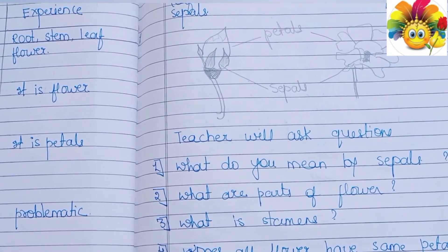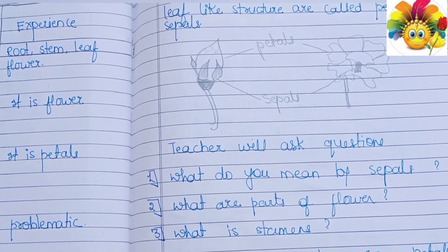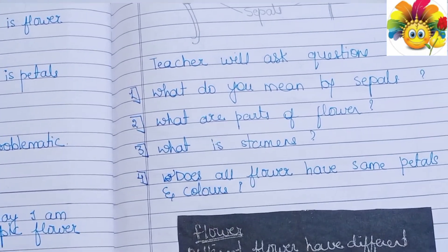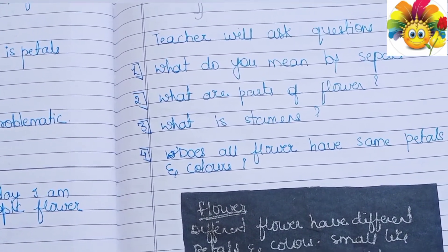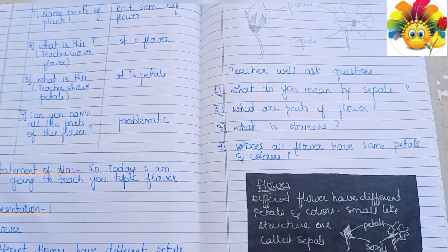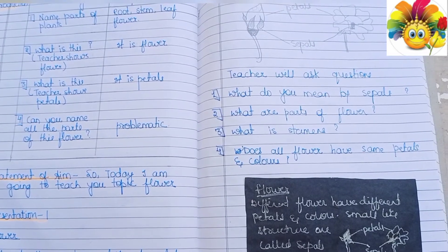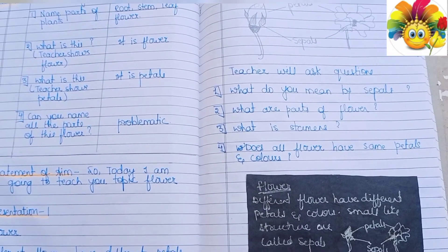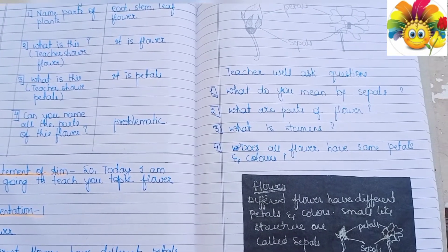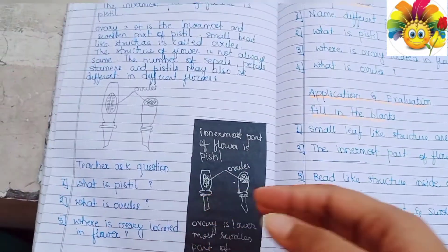Here you can see we have to present our topic to students very nicely. After that we have to ask four to five questions related to what we have talked about. You can see I have added four questions here. After that you can see blackboard work — we can draw a diagram of the flower on the blackboard.